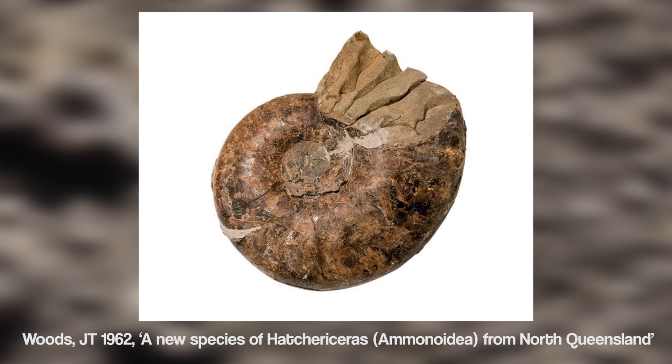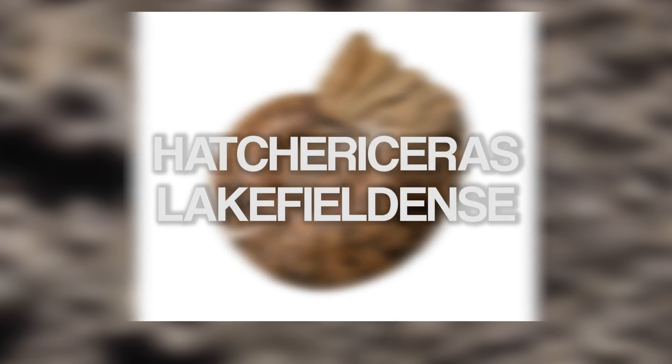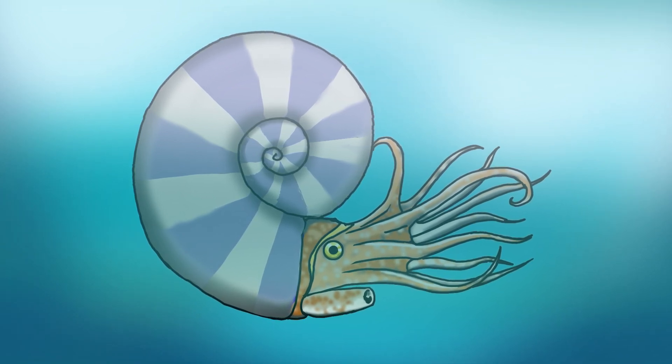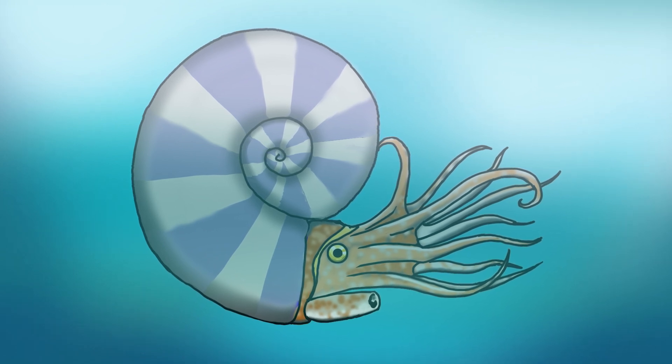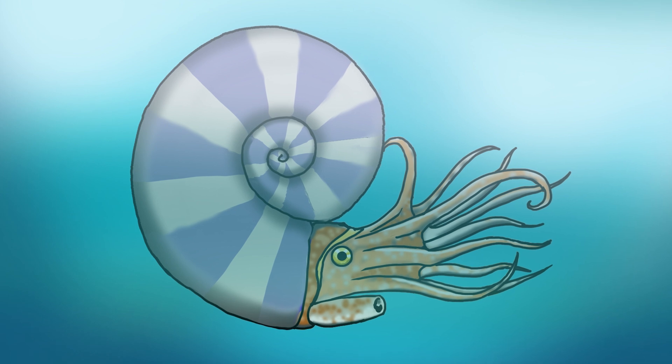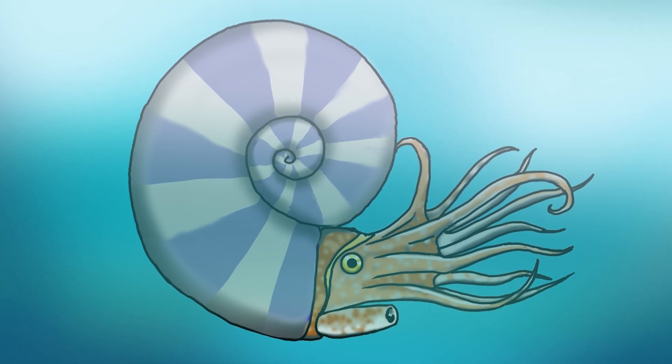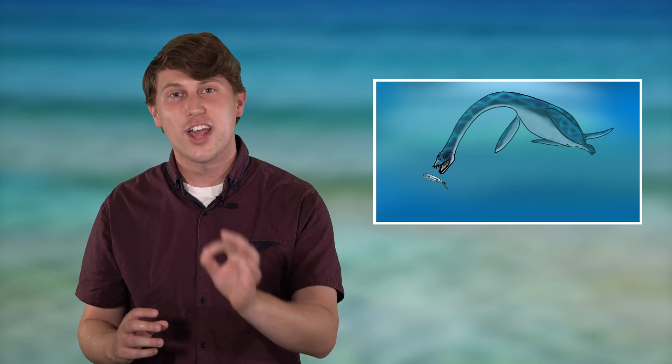One ammonite which lived in the first inland sea was Hatcheroceras lakefieldens. Ammonites are an extinct group of cephalopods related to squid and octopus. They were carnivorous and lived in spiralled shells, which they used to control buoyancy and propel themselves through the water. They were one of the most successful marine groups during the age of dinosaurs and are a signature fossil of this time. Despite the lack of fossil evidence, we also know that the first inland sea would have been inhabited by marine reptiles, because their remains have been found all over the world including similar shallow sea environments.